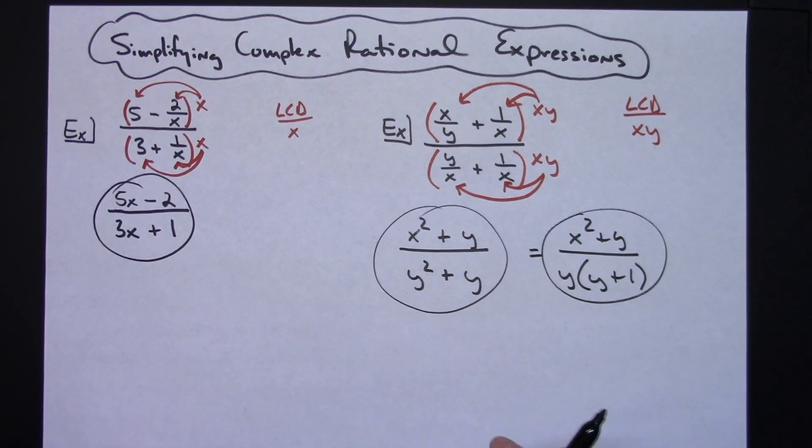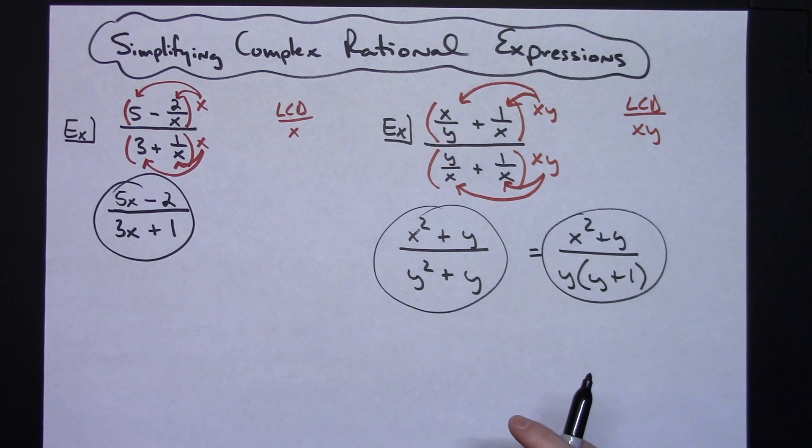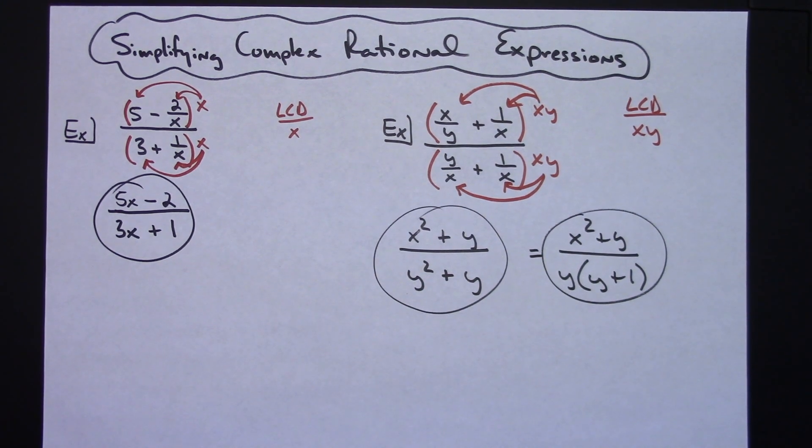So just a couple quick examples there on how to multiply through by that least common denominator in order to simplify a complex rational expression. Thanks for watching, and if the videos are helping, don't forget to subscribe to the channel and share with your friends.